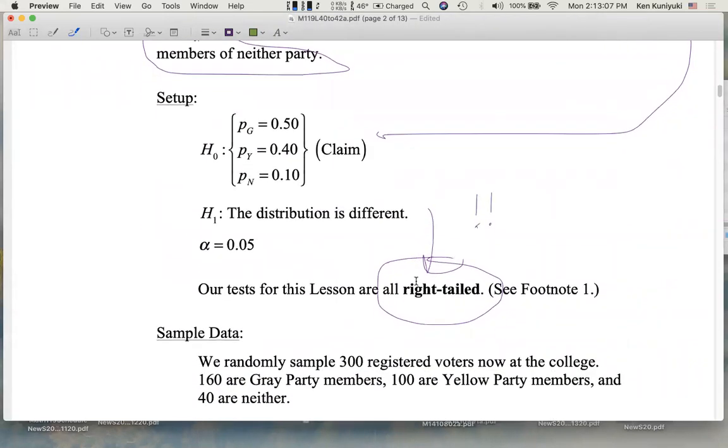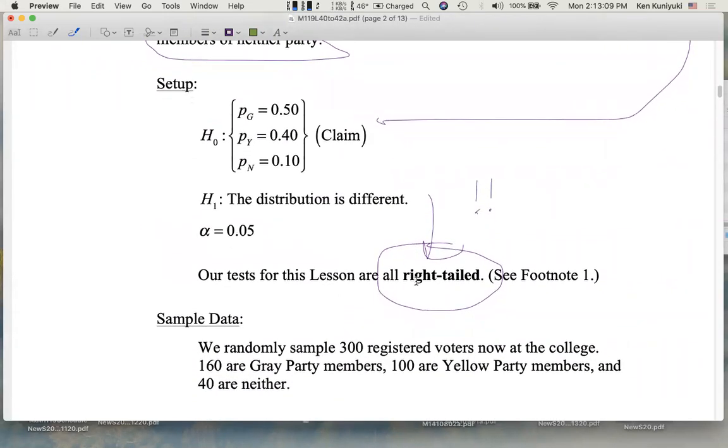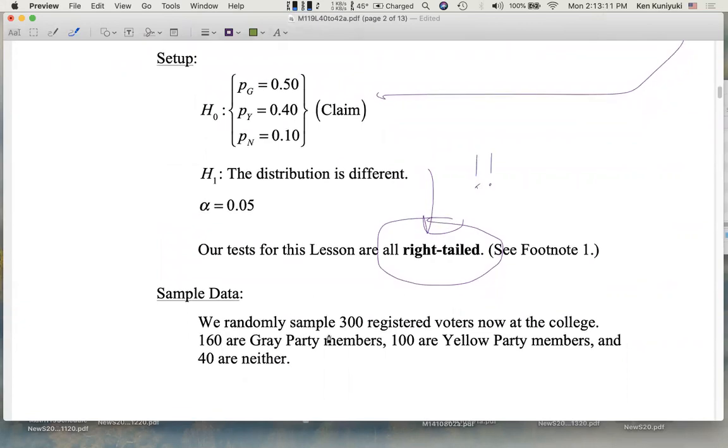So let's gather sample data. We randomly sample 300 registered voters now at the college. 160 are Gray Party members, 100 are Yellow Party members, and 40 are neither. Notice these add up to 300, so there are no other categories.